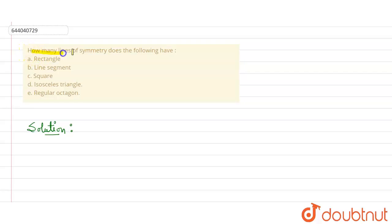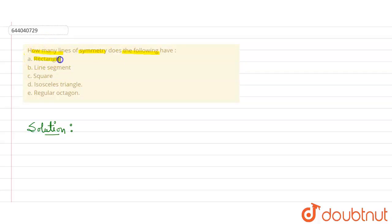In this question, we are given different figures and have to determine how many lines of symmetry each one has. We'll go through them part by part. Part A is a rectangle.